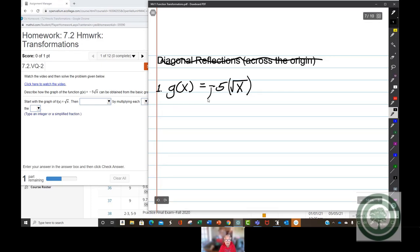This is a reflection across the x-axis. It's like reading another language. You learn how to read it. And the 5 is a vertical stretch.